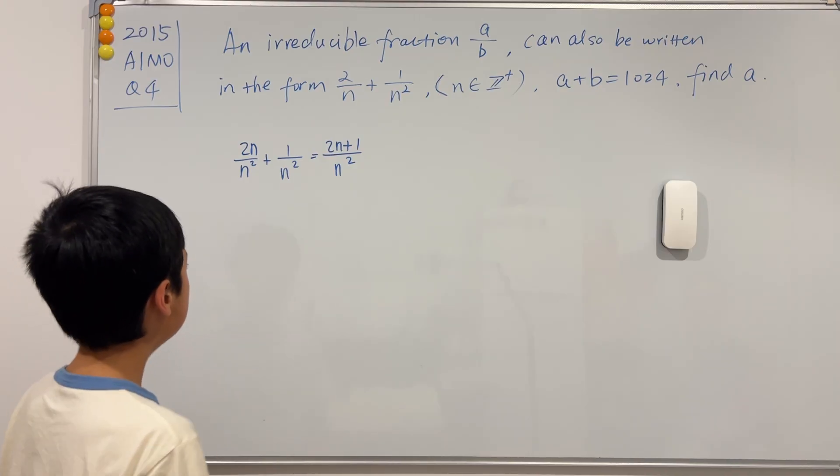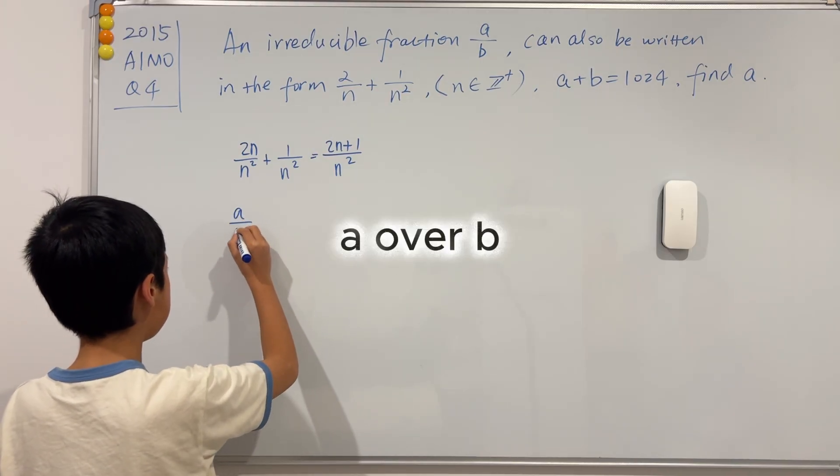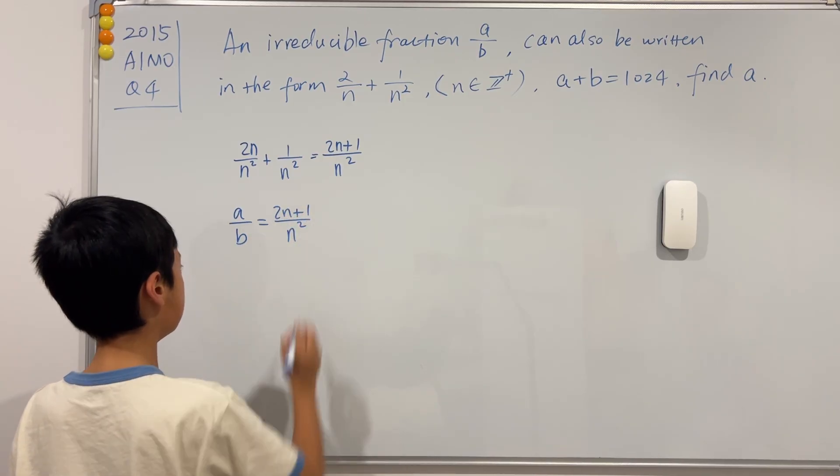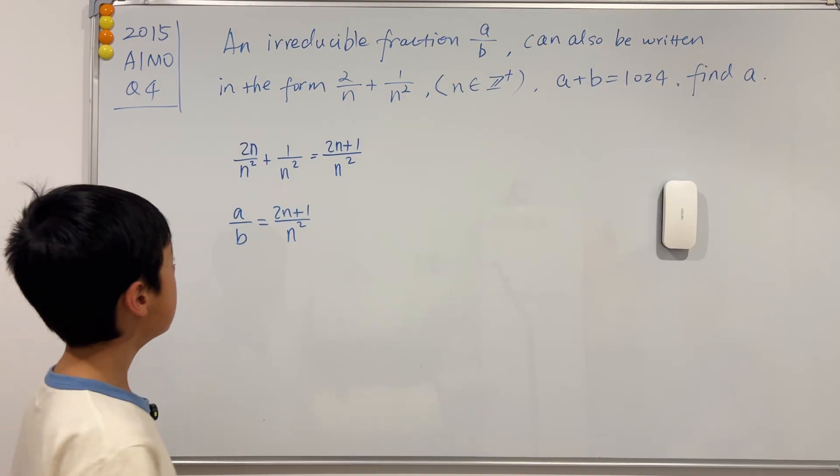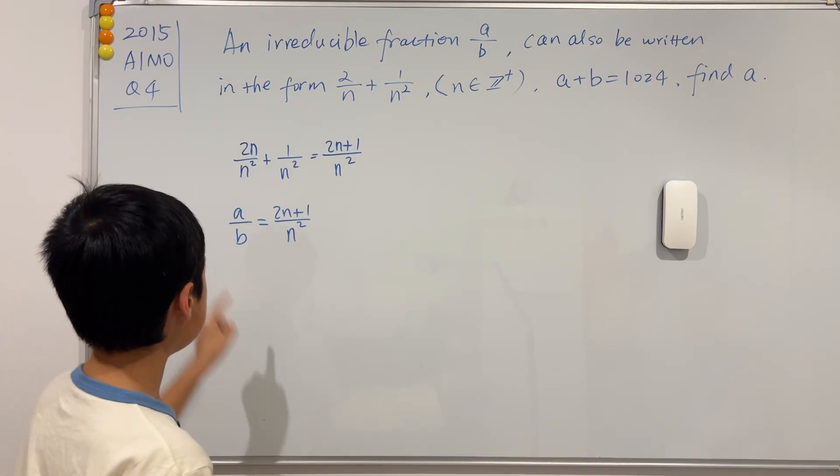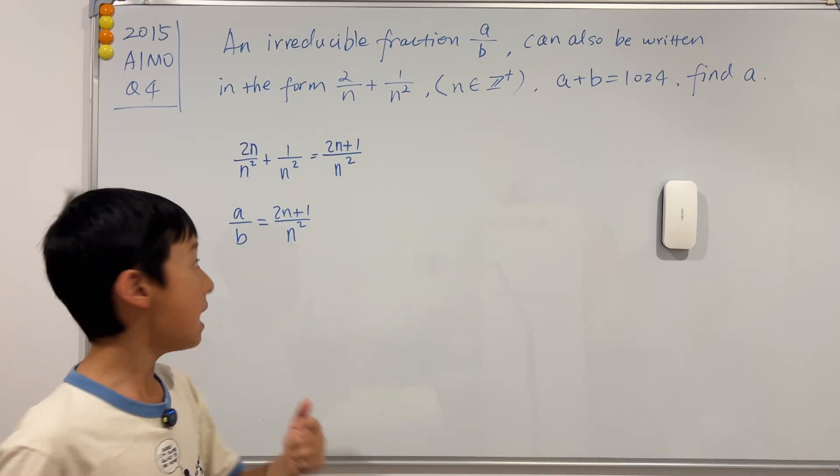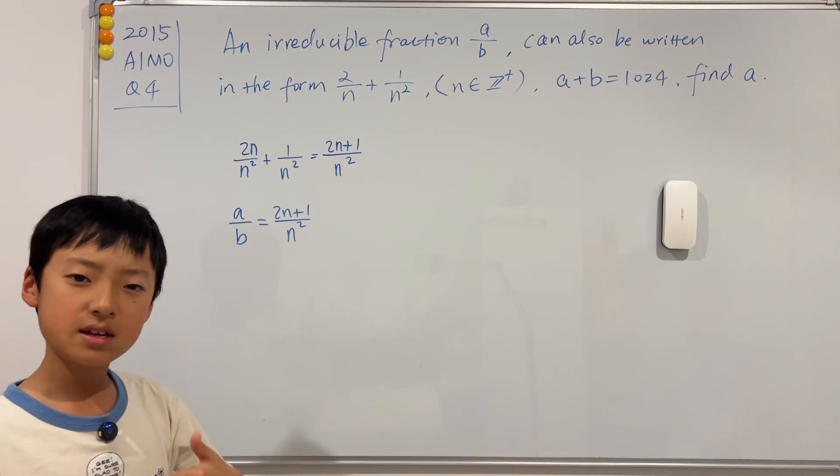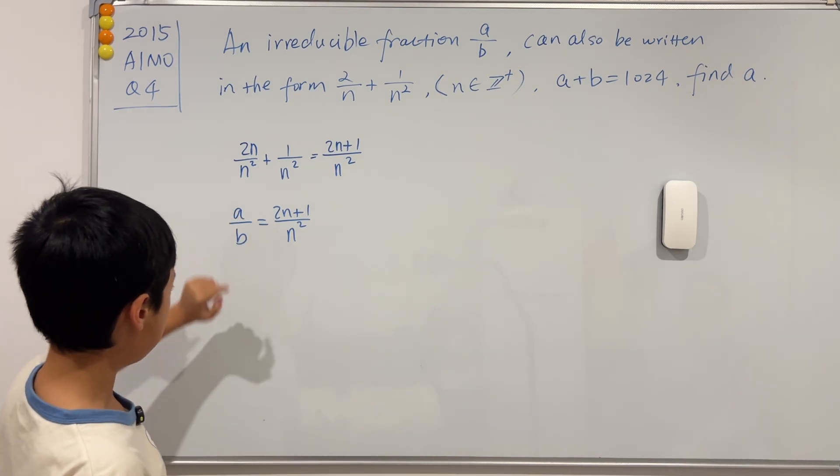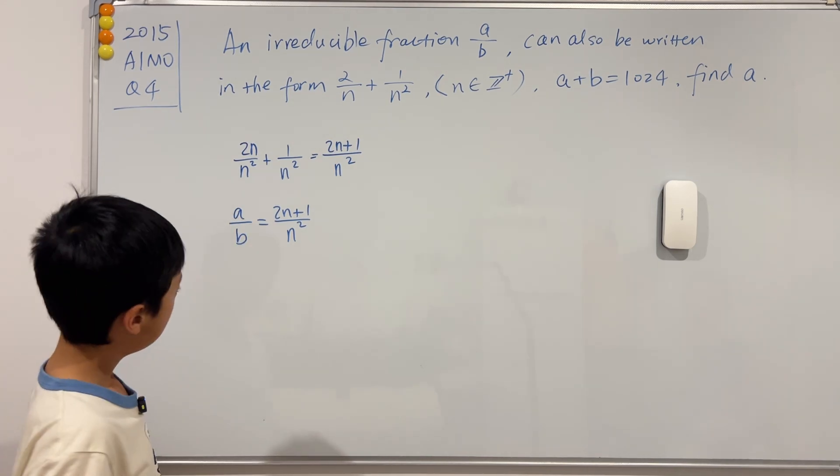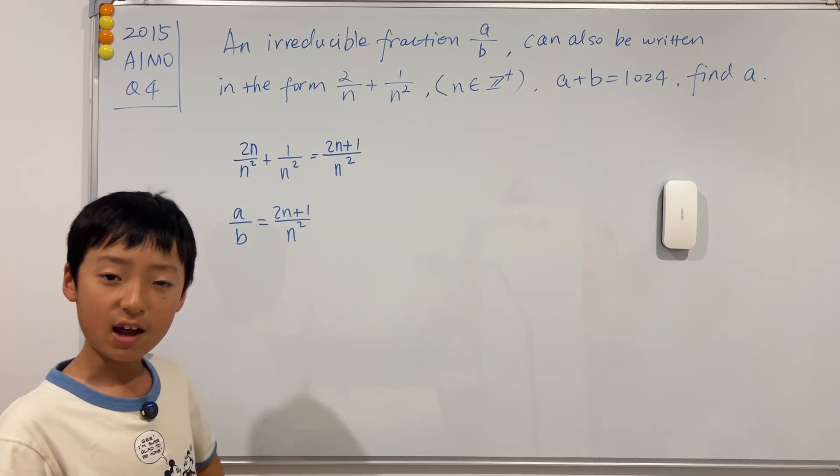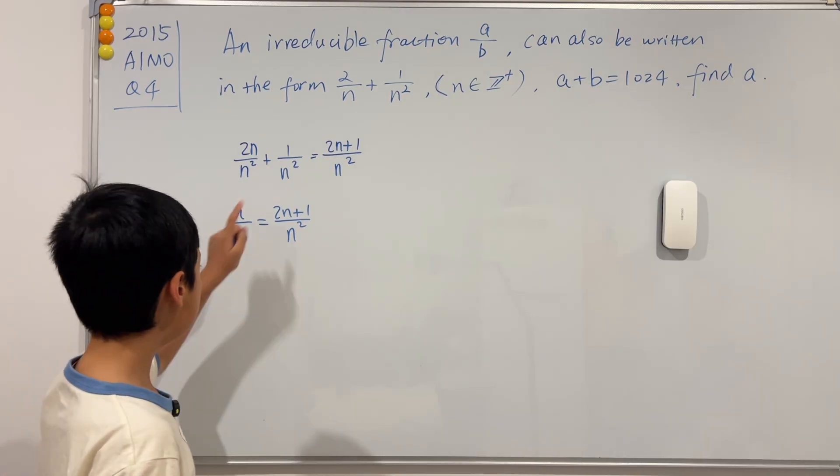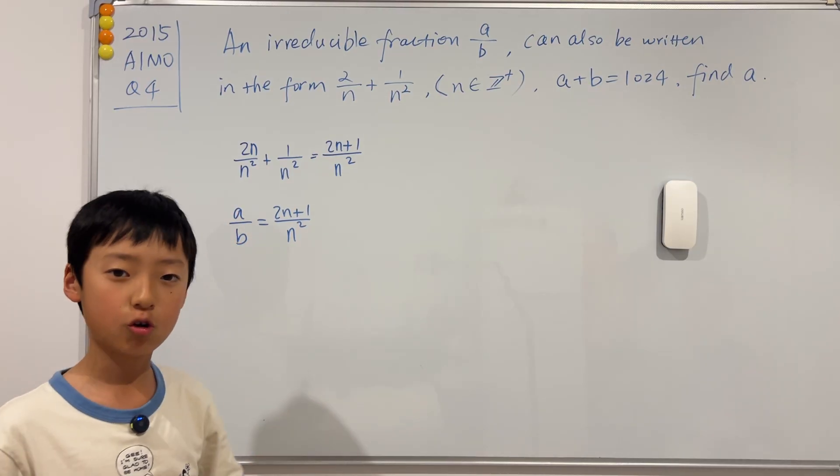Now we know that A over B is just equal to this. Another note: if A over B is an irreducible fraction, then A and B must be co-prime. Would it be that easy if A is just equal to the top and B is equal to the bottom? Well, that could be possible. But before we jump to conclusions, we first have to prove that 2N plus 1 and N squared are co-prime.